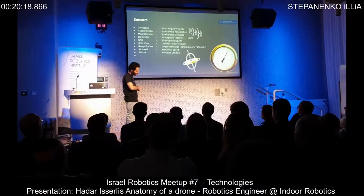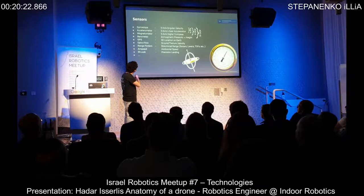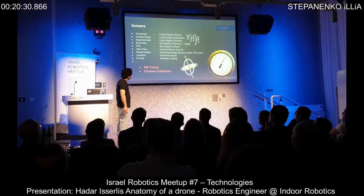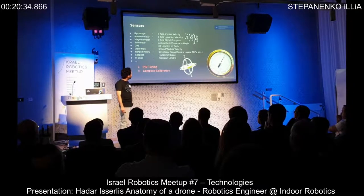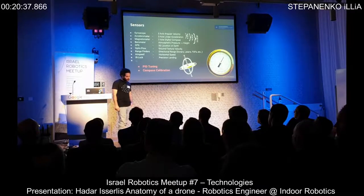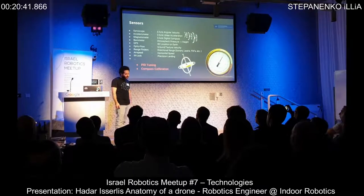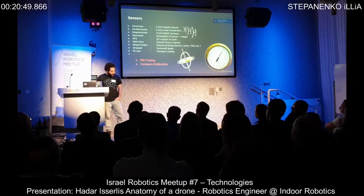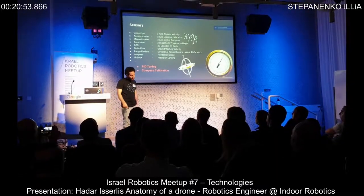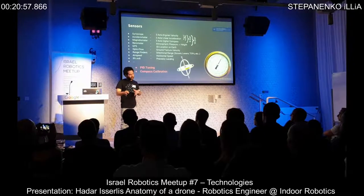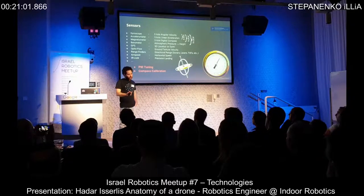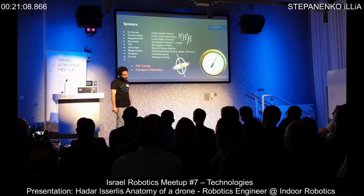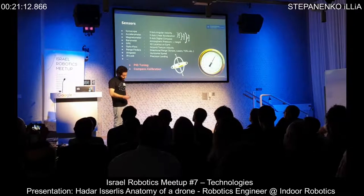We also have GPS, optical flow, a rangefinder, and airspeed sensor. A very important method when you build a quadcopter yourself is PID tuning. Most flight controllers come with default PID parameters, but you'll need to tune them for your specific setup. Every time you add weight or distribute it differently, you may need to re-tune, possibly with different PID values per axis.